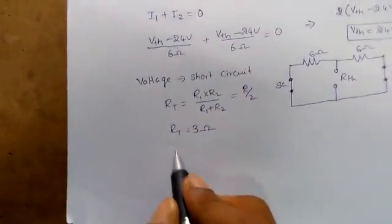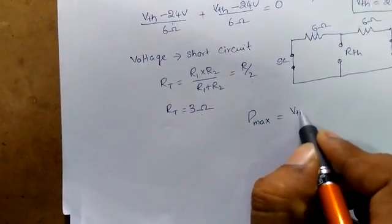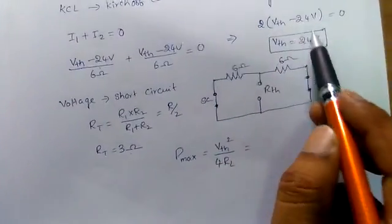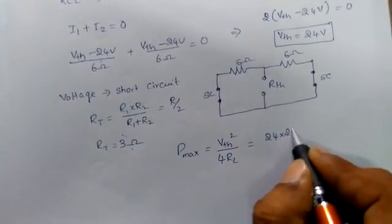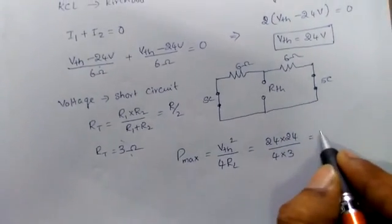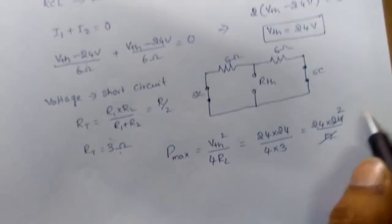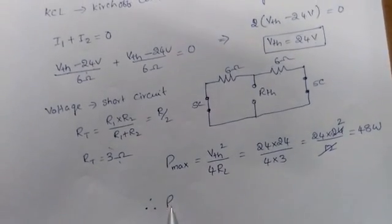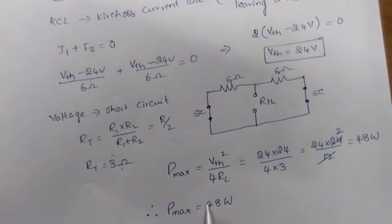Now, what is the maximum power? P maximum equals V_Thevenin squared divided by 4 times RL. We have V_Thevenin equals 24 volts and RL equals 3 ohms. So it is 24 times 24 divided by (4 times 3), which is 576 divided by 12, giving 48 watts. Therefore, the maximum power delivered is 48 watts.